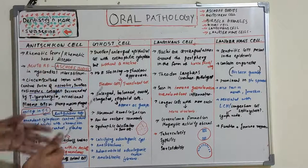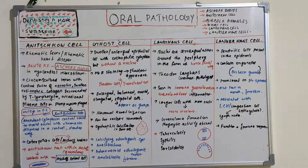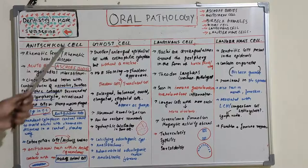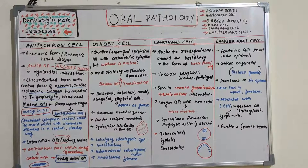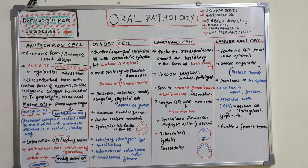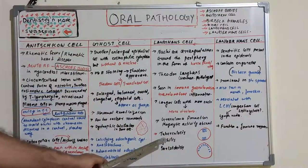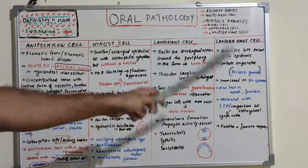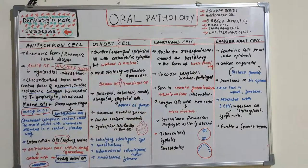We have studied Reed-Sternberg cells and we have many more cells and inclusion bodies in pathology. These are common questions in university exams. Always keep in mind: Anishkov cell and Ashoff's body are associated with rheumatic fever; ghost cells have four main conditions; Langhans cells are associated with tuberculosis, syphilis, and sarcoidosis; and Langerhans cells are dendritic cells seen in the stratum spinosum with Birbeck granules. Thank you.